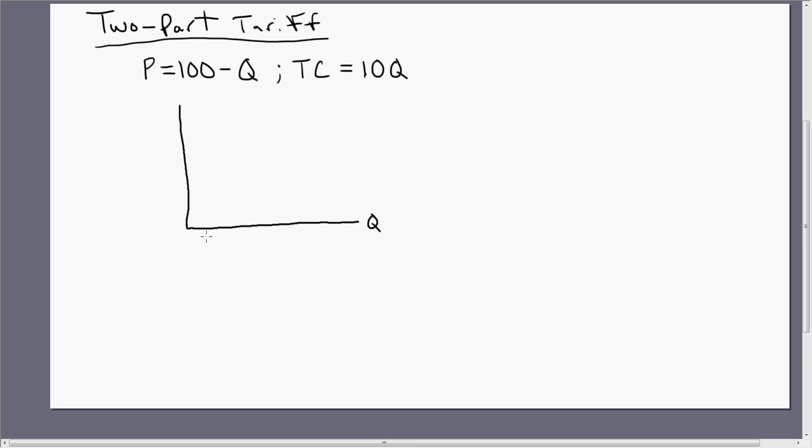First thing I'm going to do is graph this inverse demand. The firm faces an inverse demand of price equals 100 minus Q. Let's go ahead and graph that. If Q is zero, price is 100. So just plugging in zero for Q, we get P equals 100 to get the vertical intercept. If P is zero, solving for Q, Q equals 100 for the horizontal intercept.